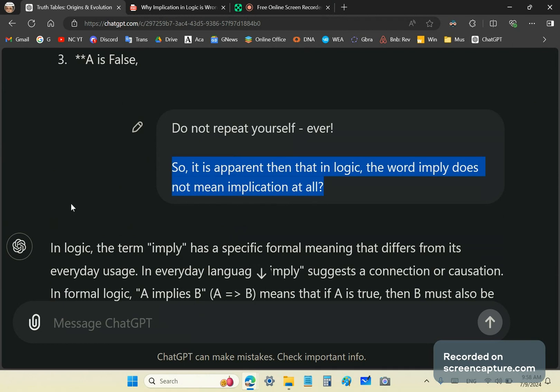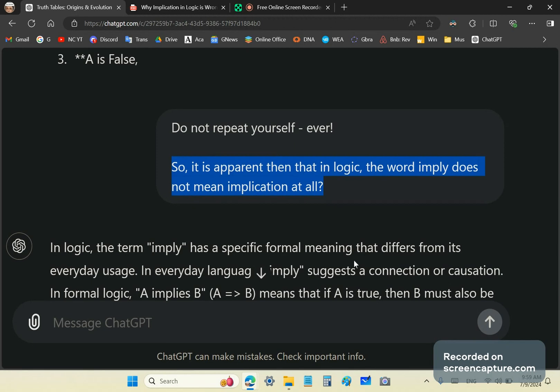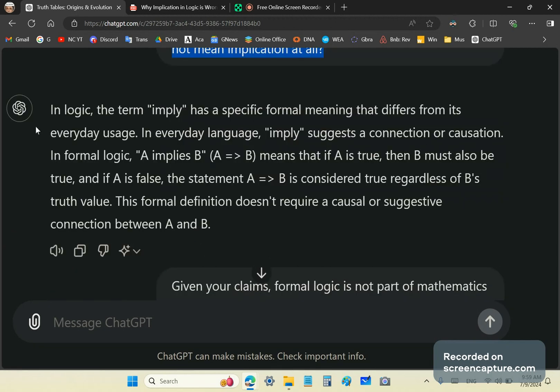You would think that they would use words that contain or point to the attributes of what they want to discuss rather than something totally different. So GPT says in logic that the term imply has a specific formal meaning that differs from its everyday usage. Well, why on earth use the word imply then? Why not create a brand new word and say limply, for example, or logically, because it doesn't mean anything to do with imply.